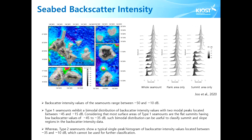What we see in the next slide is seabed backscatter intensity. The backscatter data provide additional information on the seabed floor, mole pulses, and substrates, because this intensity can be correlated with seabed roughness and hardness. Backscatter intensity values of the seamounts range between minus 50 and minus 10 dB. Type 1 seamounts span a broader range of scatter intensity than the type 2 seamounts. Type 1 seamounts show a bimodal distribution of backscatter intensity values with two modal peaks located between minus 45 and minus 15 dB.